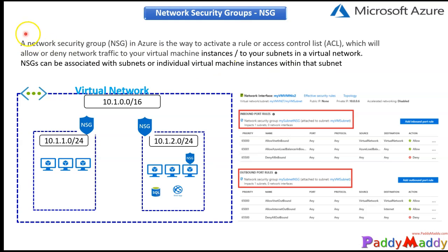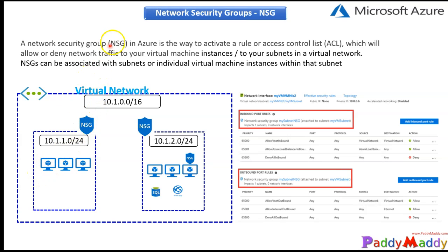You can apply an NSG at the subnet level — for example on a 10.1.1.0 subnet or another subnet like 10.1.2.0/24. Once assigned, any traffic going out from a machine in that subnet is outbound, and any traffic coming from outside into the virtual machine is incoming.